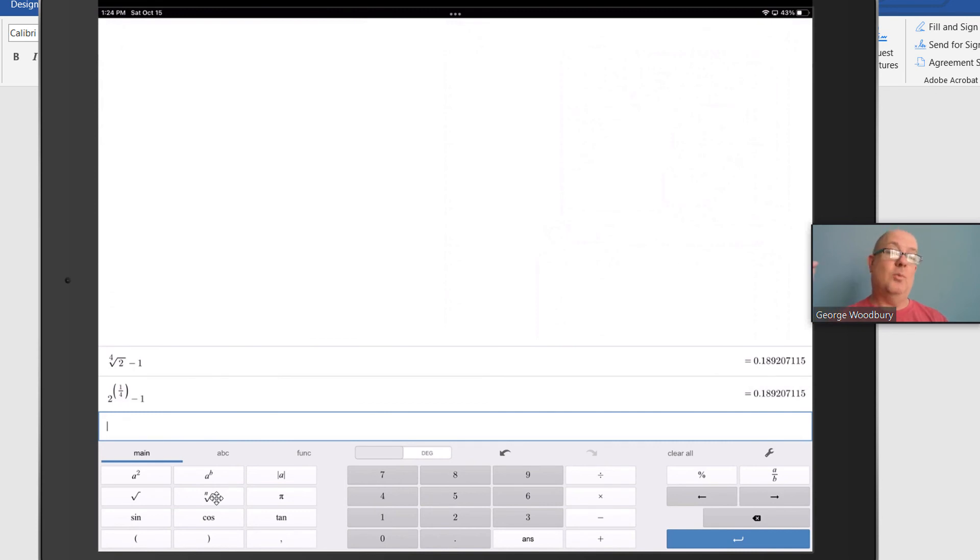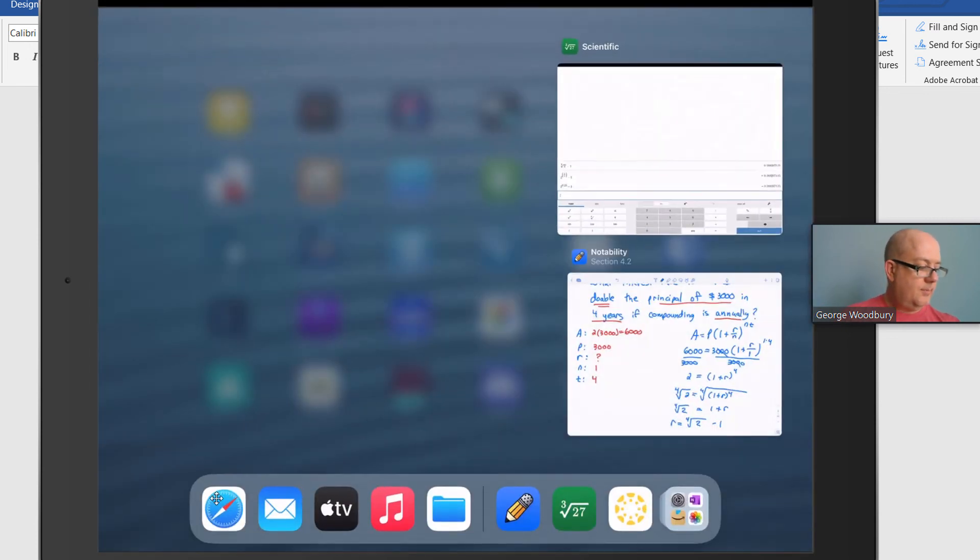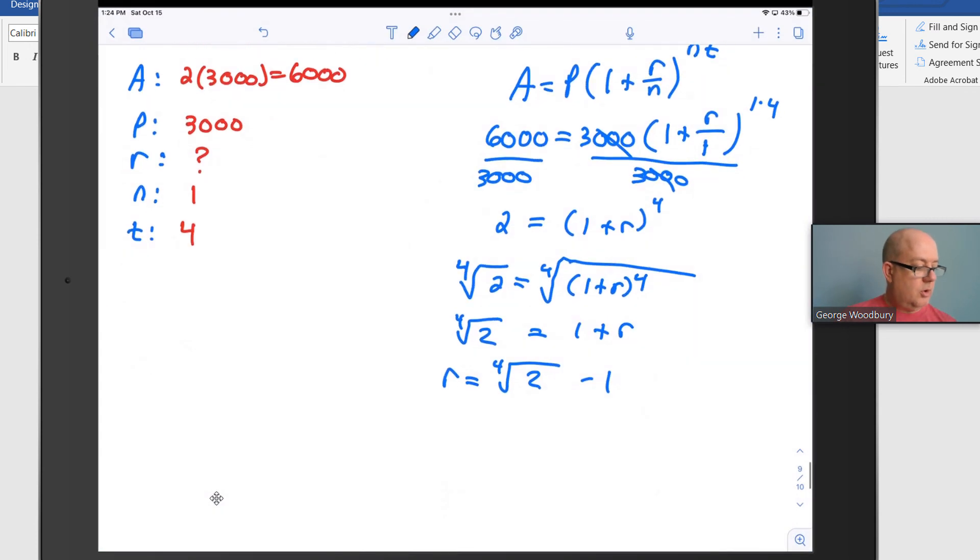If you're struggling to get one-fourth into your calculator, we know that one-fourth is 0.25. So I could also raise 2 to the 0.25 power, and then subtract 1 from there. Either way, I get the same result, 0.189, et cetera. I'm going to round it to three places. So r is approximately 0.189, or 18.9%. So to double your money in four years, the interest rate would have to be approximately 18.9%.